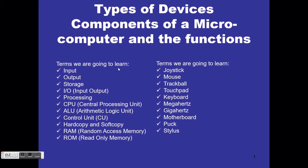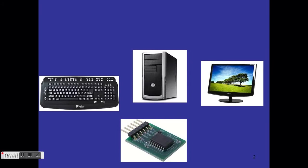The terms we are going to be learning: input, output, storage, I/O which stands for input/output, processing, CPU which is our central processing unit, ALU arithmetic logic unit, control unit, hard copy, soft copy, RAM random access memory, ROM read only memory, joystick, mouse, trackball, touchpad, keyboard, megahertz, gigahertz, motherboard, puck, and stylus. You may pause your video here and copy these terms — you will be assessed on them.